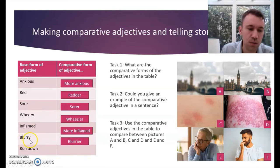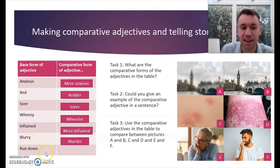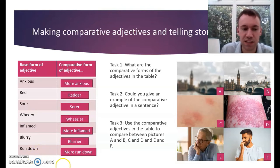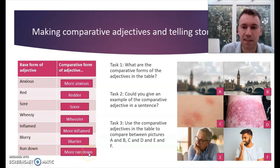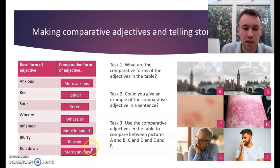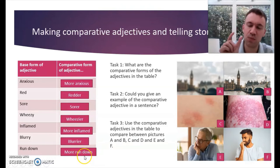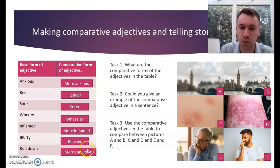'Blurry' — two syllables, ends in Y, therefore 'blurrier.' And the final one: 'run down.' This is a phrasal verb being used as an adjective here — 'more run down.' With these types of adjectives, although they are two words — two one-syllable words — we should consider them as though they were one two-syllable word when it comes to forming the comparative.